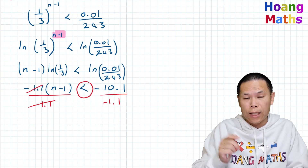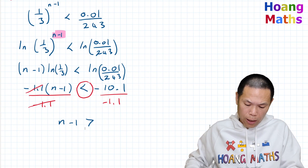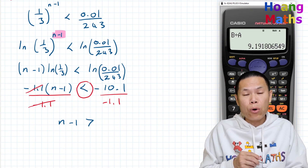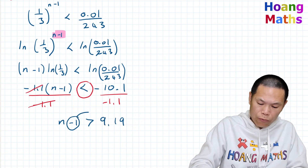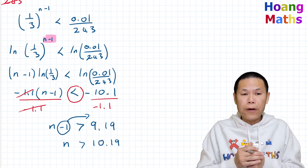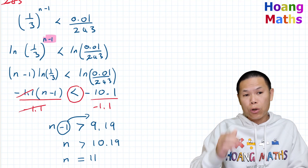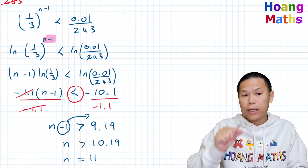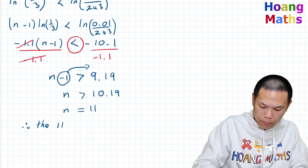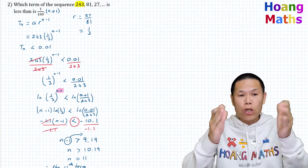On the calculator: b divided by a gives 9.19, so n−1 > 9.19, meaning n > 10.19. Since we want the first term less than 0.01, n must equal 11, because n = 10 would still be greater than 0.01. Therefore, the 11th term is the first term less than 1/100.